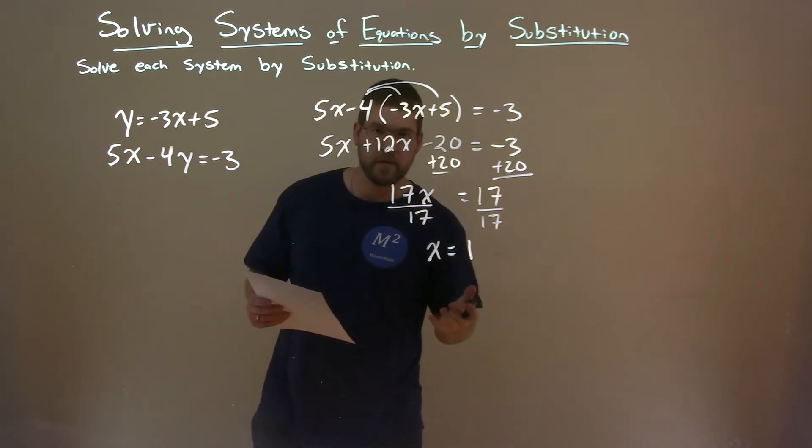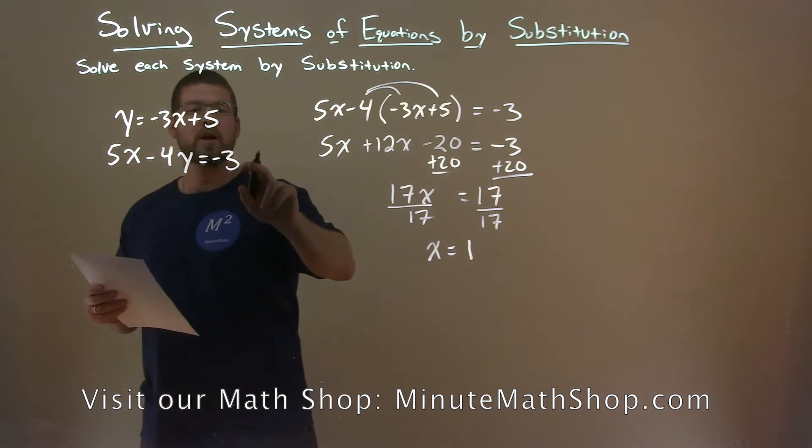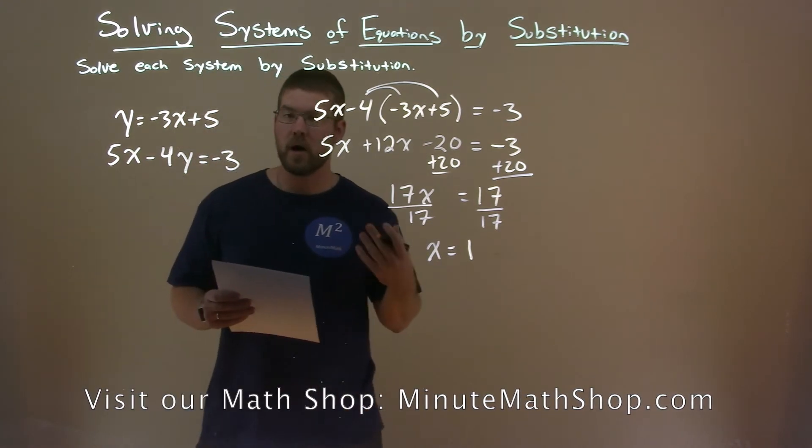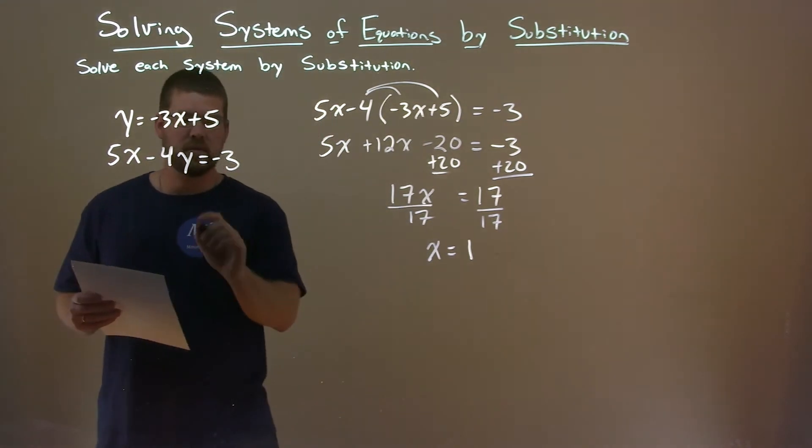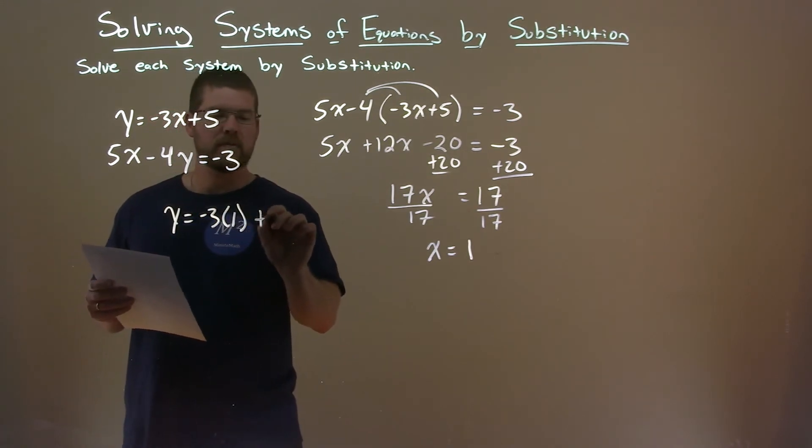So where do we go from here? Well, we need to take that x equals 1, and we're going to plug it back into one of our other equations and solve for y. First equation looks easier: y equals minus 3 times 1 plus 5.